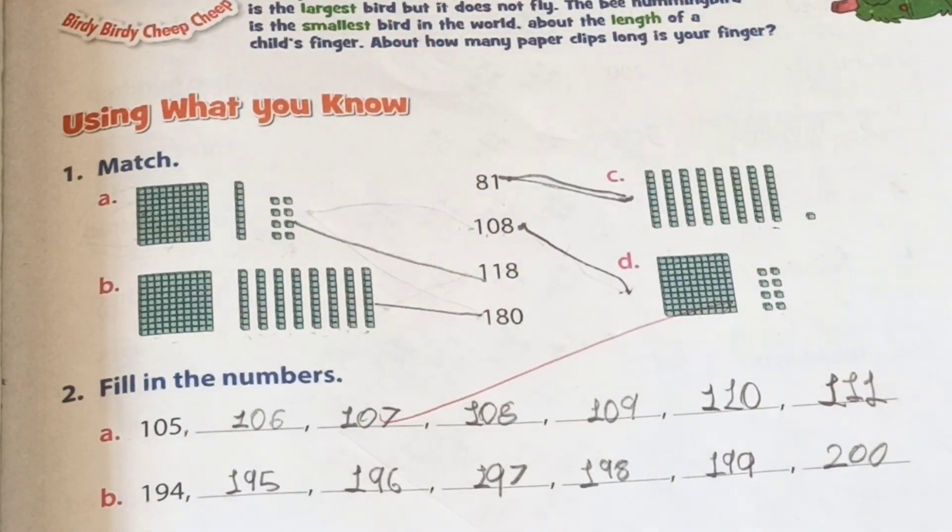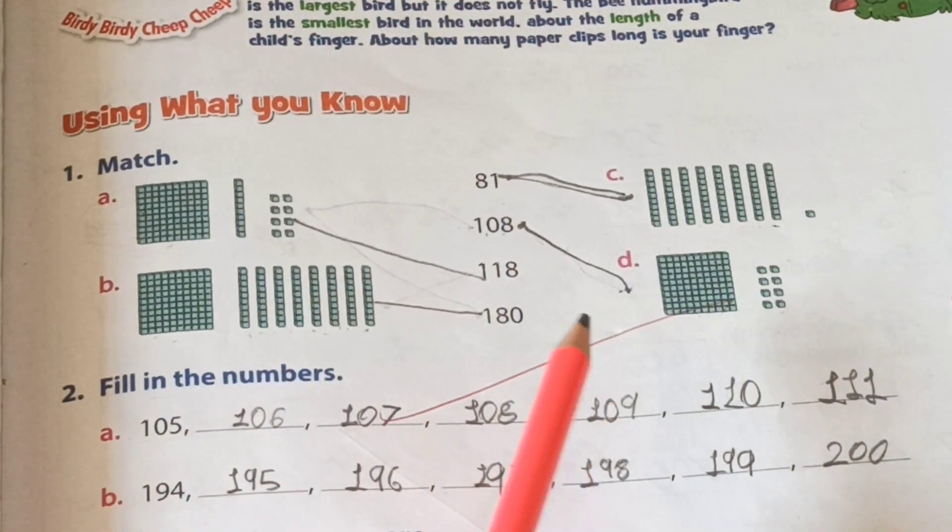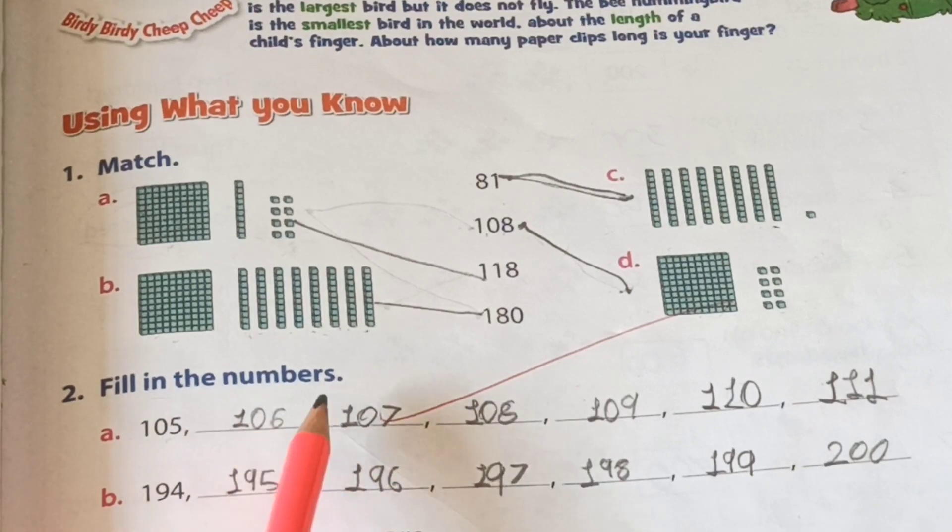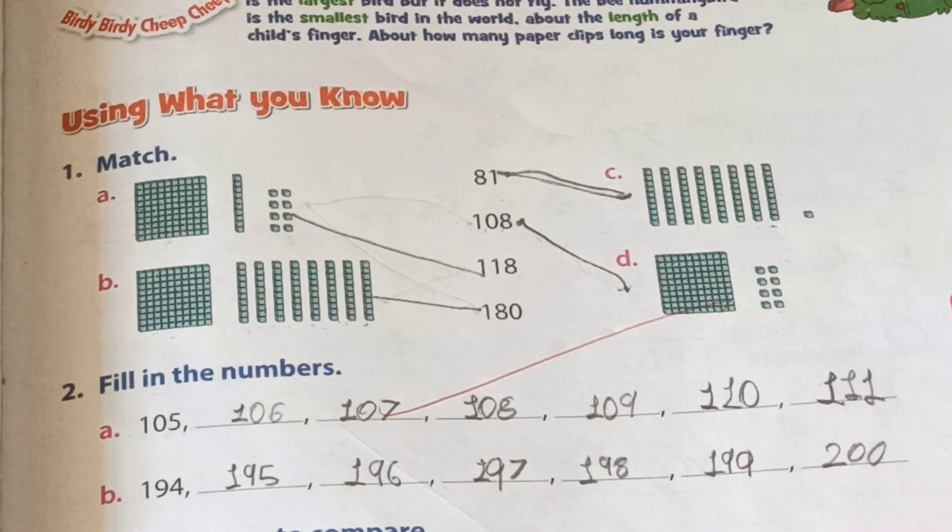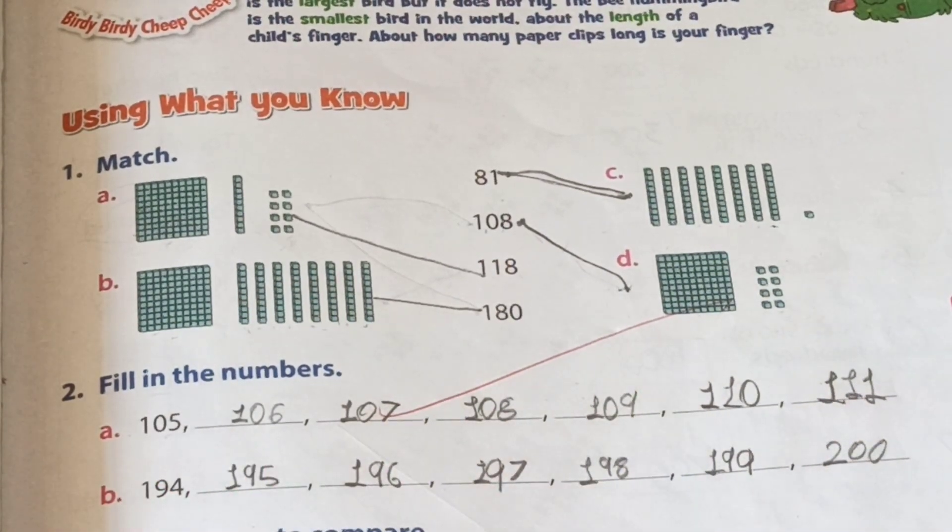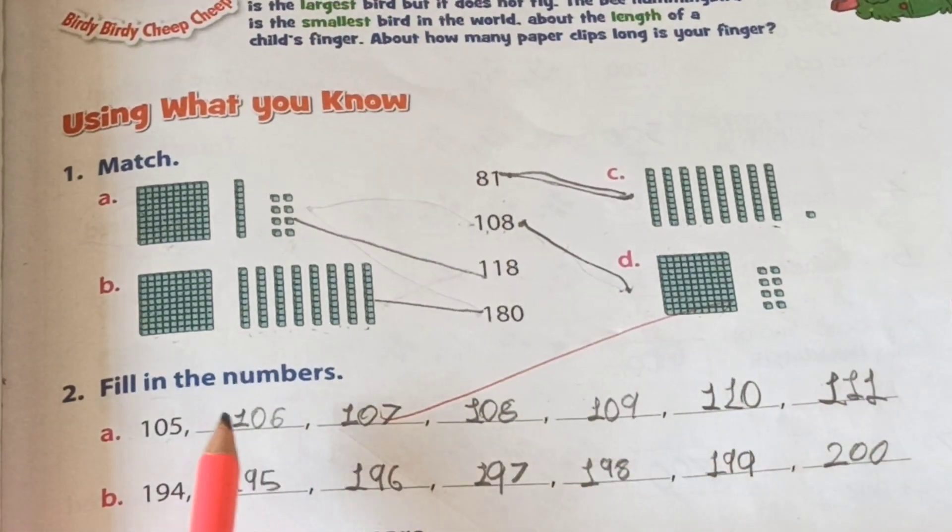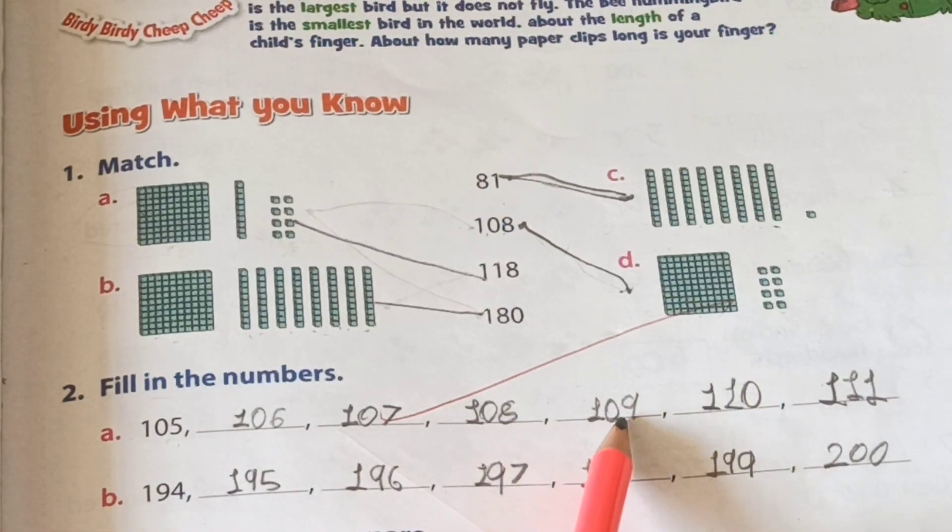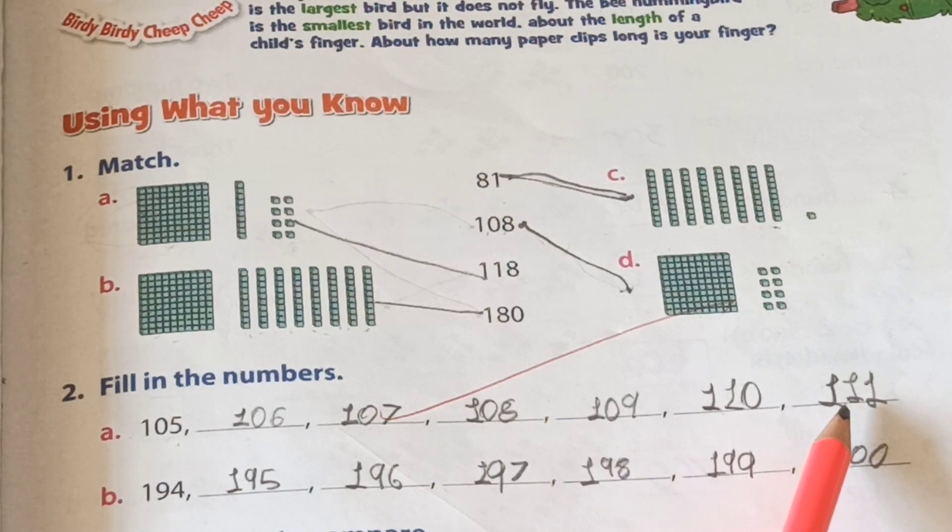Kids, the next question for us: Fill in the numbers. Okay, see. Textbook given only one number in A. See, one hundred five. Then they given here few blank lines for us. So we fill their numbers. One hundred five, then one hundred six, one hundred seven, one hundred eight, one hundred nine, one hundred ten, one hundred eleven.